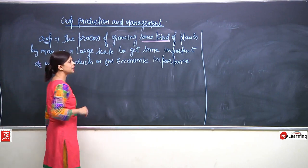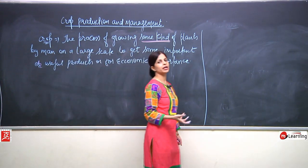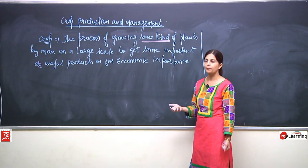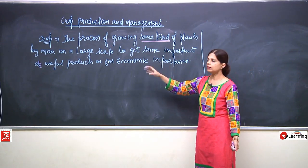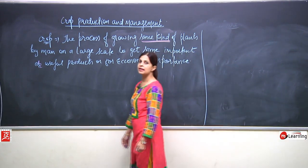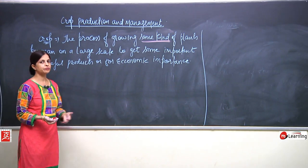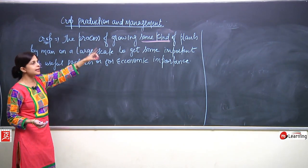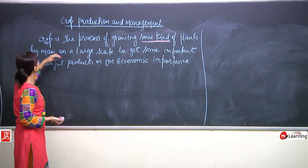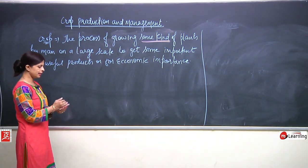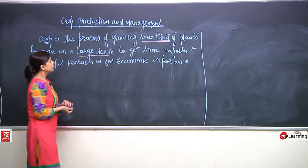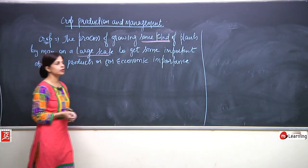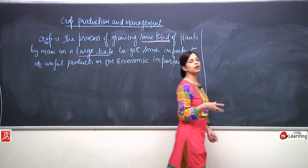What is the meaning of 'important and useful products'? When we talk about crop production, the result may be wheat, rice, or similar — these are useful products. It can also have economic importance, meaning it can be money-giving. So this is exactly what a crop means.